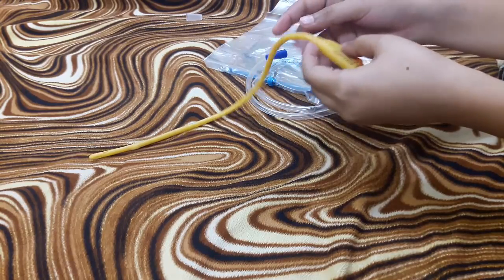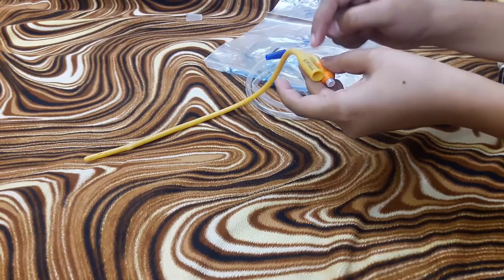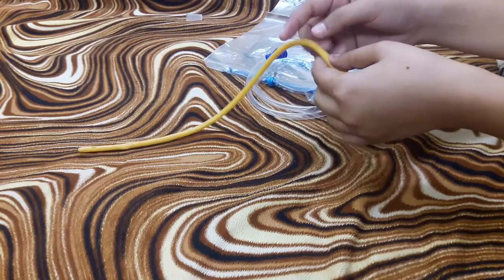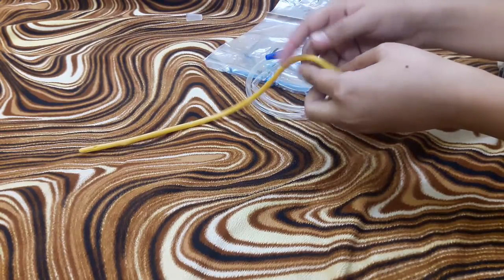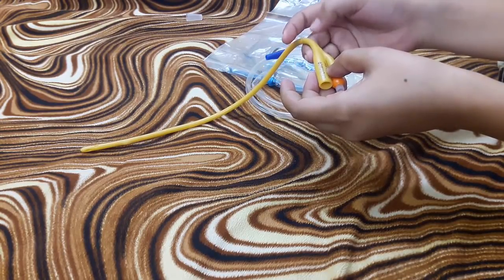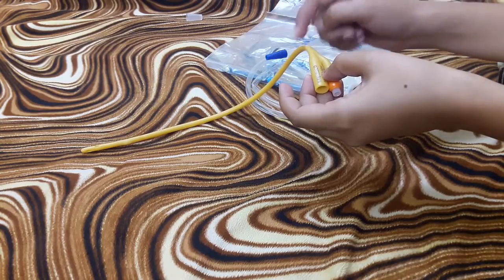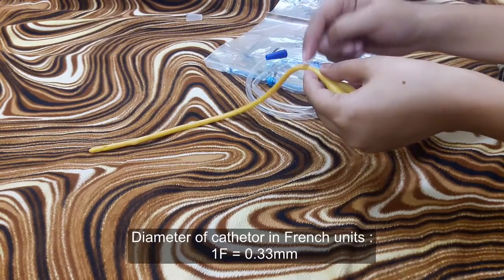It is written at the rim end of the main channel, and this indicates the circumference of the catheter. 16 French equals 16mm of circumference of this catheter.